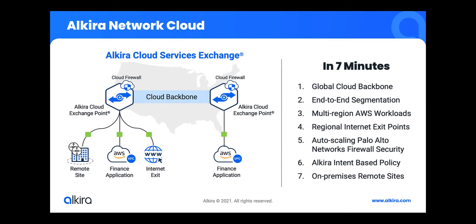Enter Alkira Network Cloud, powered by the Alkira Cloud Services Exchange. In the next couple of minutes I'm going to demonstrate how you can achieve unprecedented agility in building a secure and segmented network for your AWS and on-premises environments, with elements of integrated auto-scaling firewalls and regional internet exit points for optimal SaaS application access. If that sounds interesting, let's see how it's done.